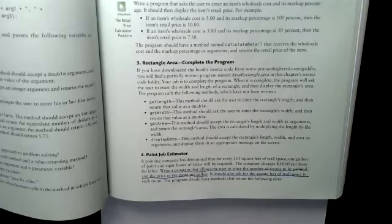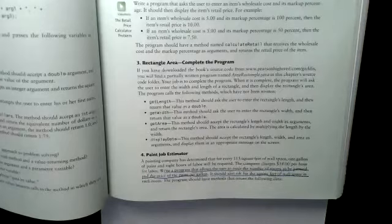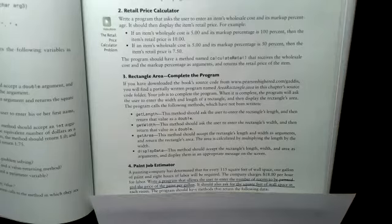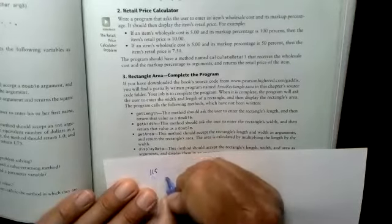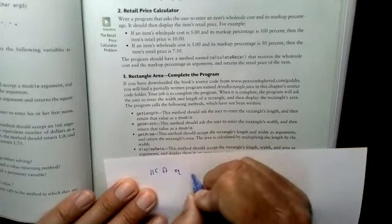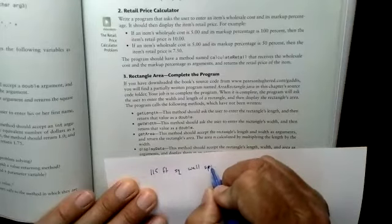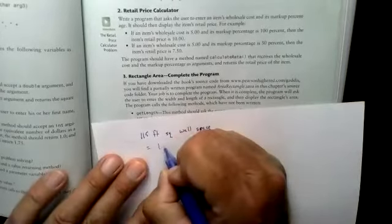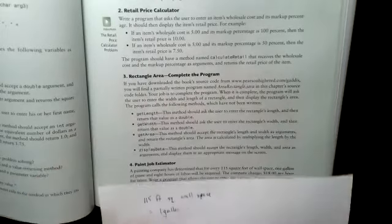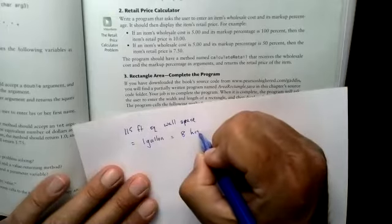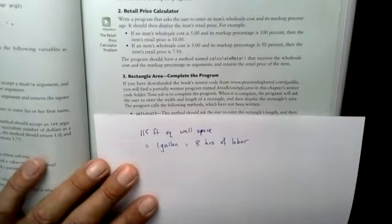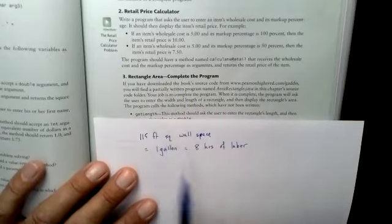A painting company has determined that for every 115 square feet of wall space, one gallon of paint, and eight hours of labor. So I'm going to start making notes because I have to write stuff down. I can't, I'm not as good as you folks. And I'm taking a look at 115 feet of wall space, 115 feet square wall space. So I'm starting to create something like pseudo code, took the problem, just starting to make notes, took a paragraph, and I'm reducing it down to what I need.